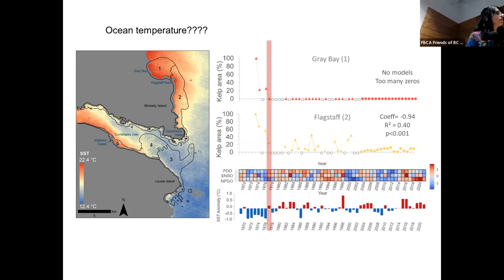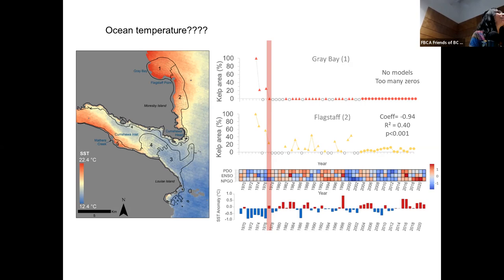A question from the online audience about whether charts from other explorers beyond the British were examined — for example, Spanish hydrographers in the Puget Sound area. I didn't specifically check which country provided which charts — they are all called BA charts, so maybe it's a mix. However, someone clarified that the Spanish didn't chart kelp before — they were doing reconnaissance charts — and the first kelp maps were from Richards.